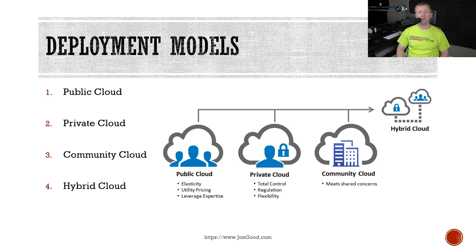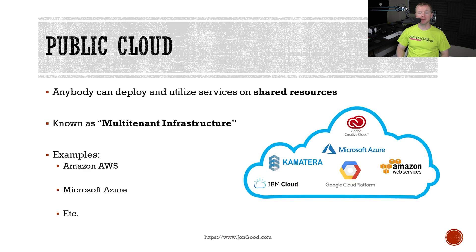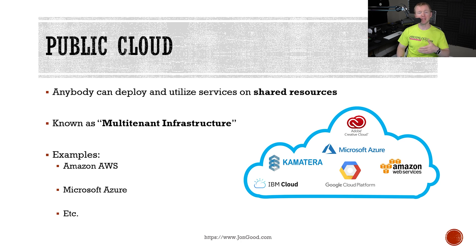When it comes to the cloud, we also have deployment models that we have to choose from. Deployment models address the 'where' we are going to have our cloud hosted. Models that you need to know are public cloud, private cloud, community cloud, and hybrid cloud. Public cloud is typically what most people are referring to when cloud comes into a conversation. With public cloud deployments, any customer can deploy services that then operate on shared infrastructure — that's the key, shared infrastructure. We might also call this multi-tenant infrastructure because many customers are sharing the resources. Examples include Amazon AWS and Microsoft Azure.